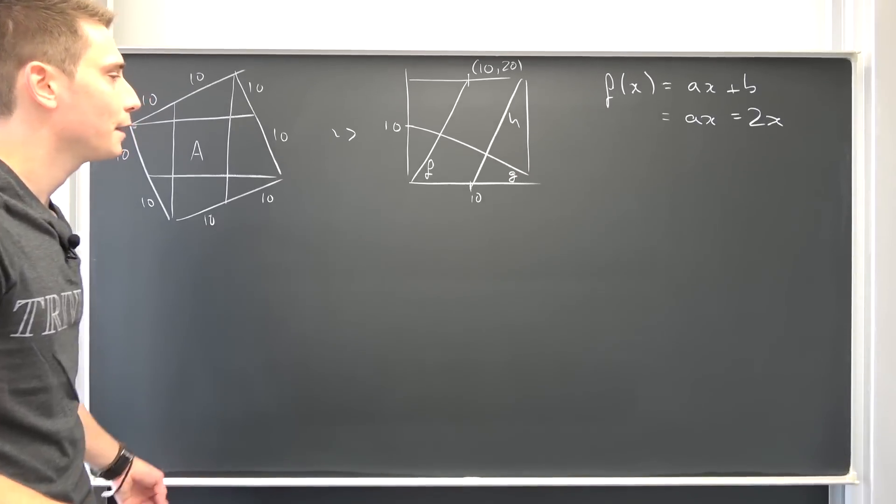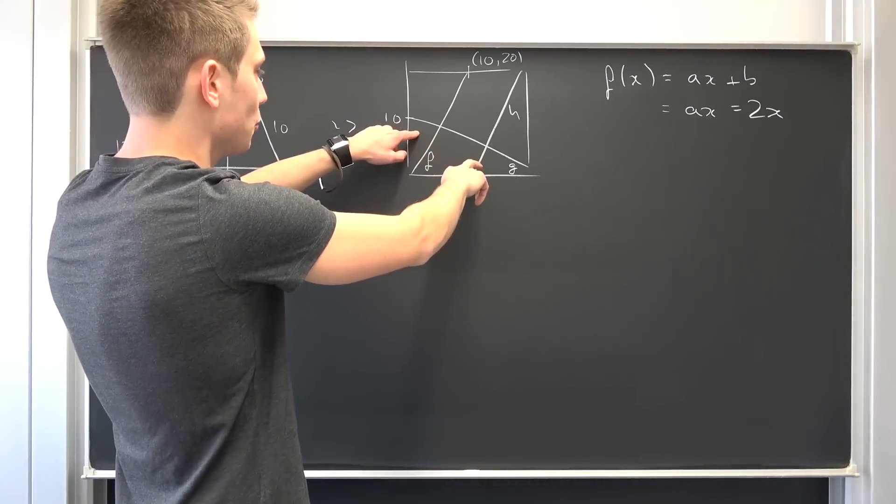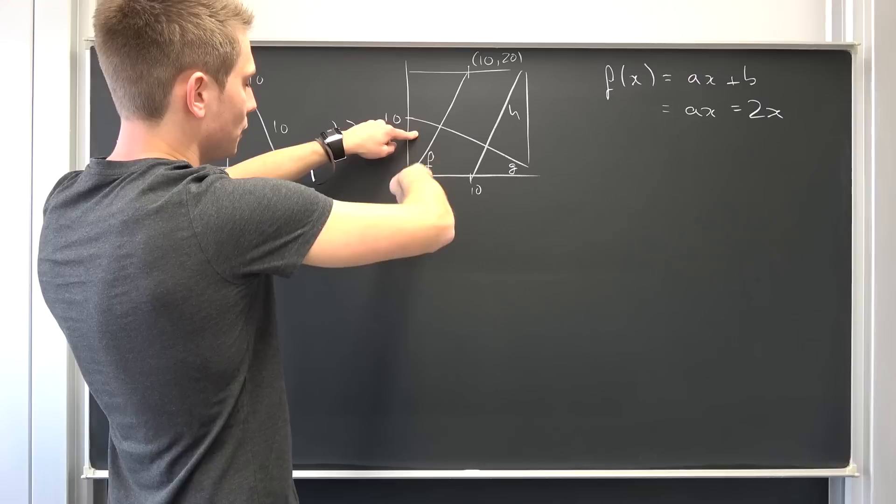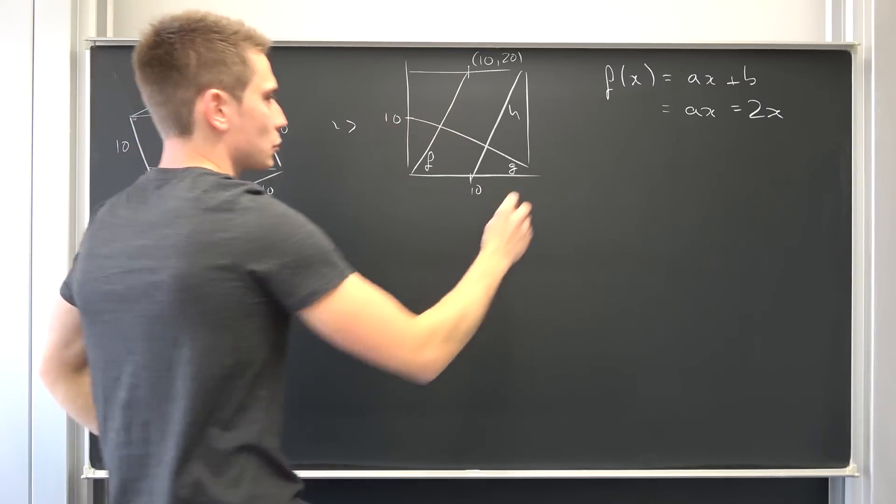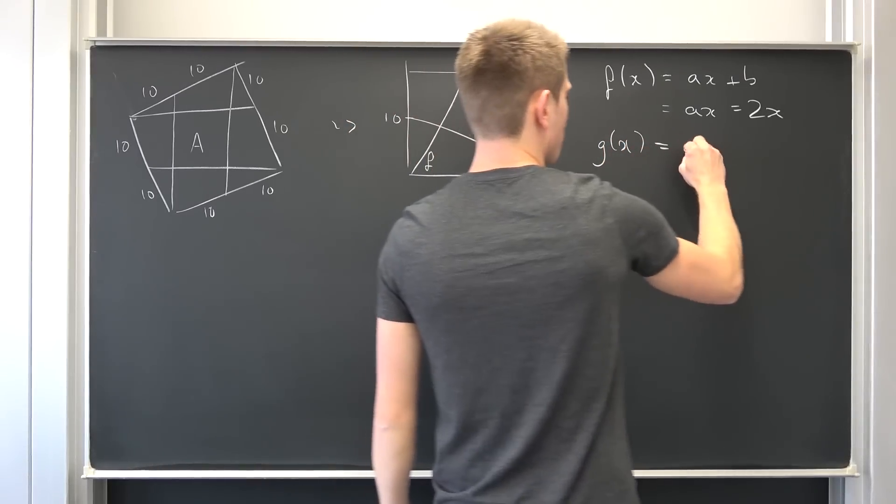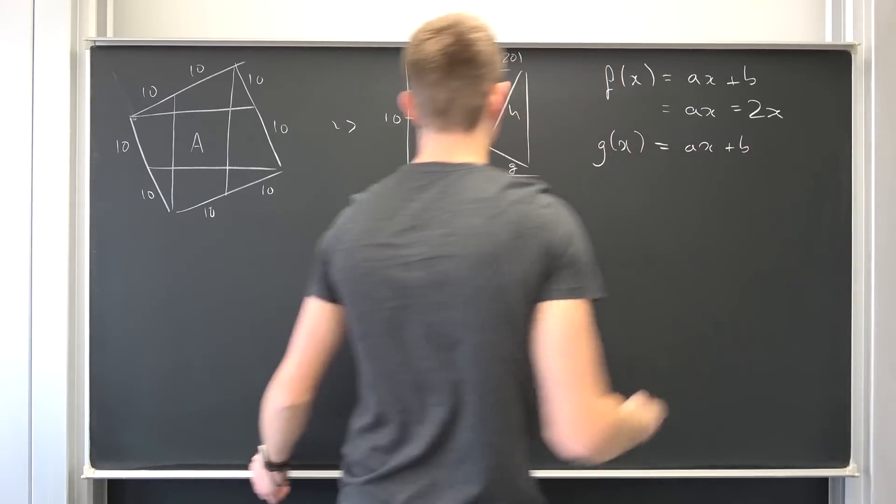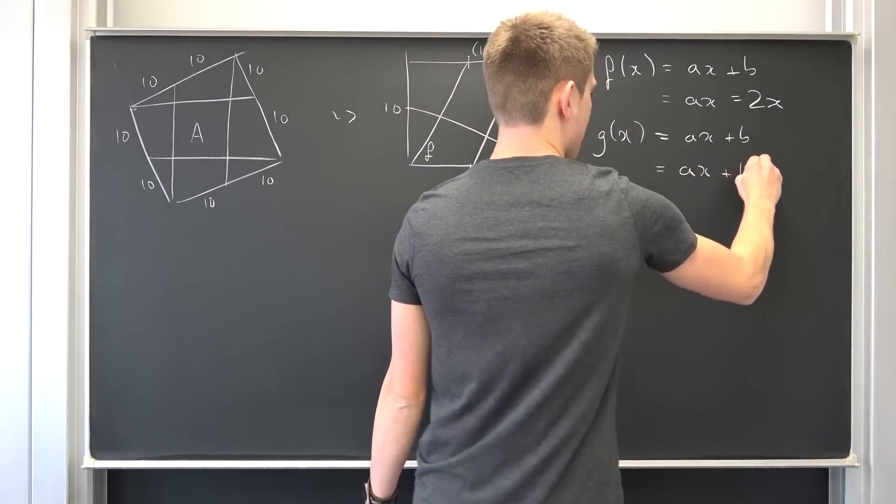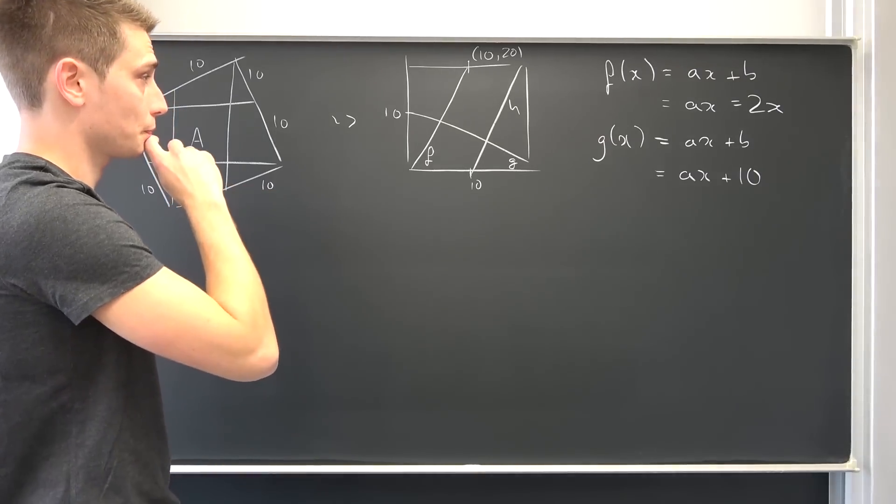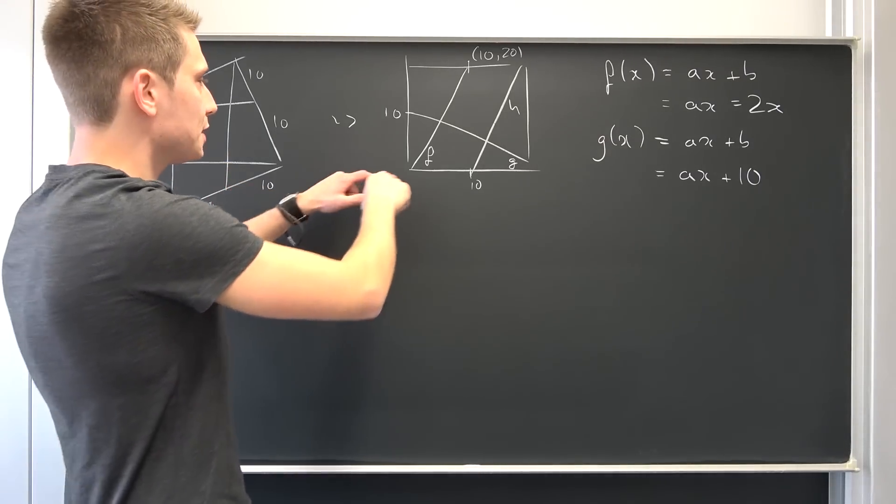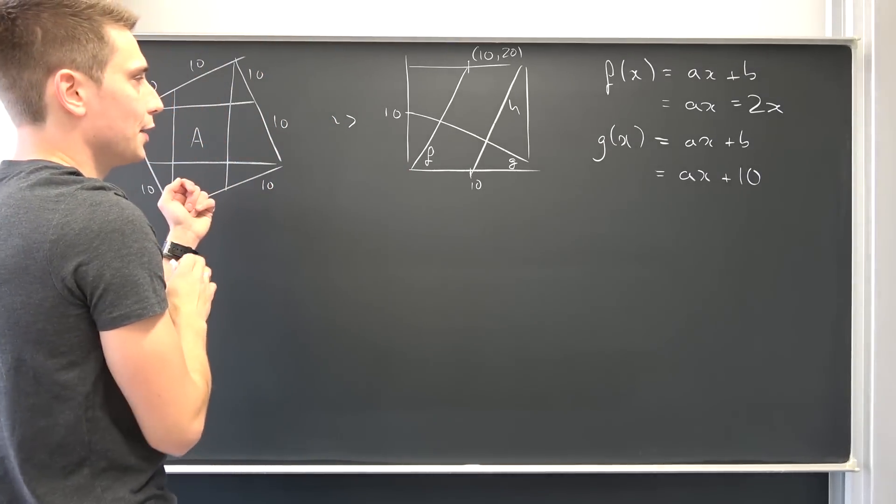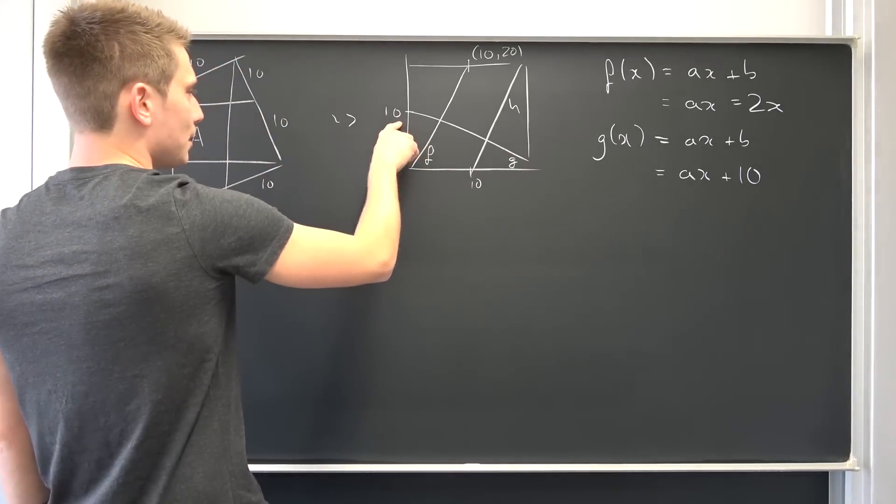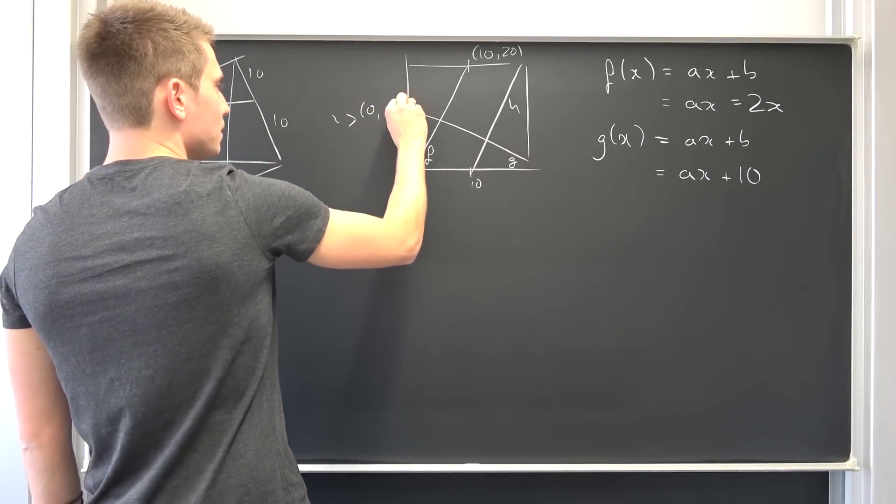Now what about our g of x? Our g of x is basically a normal to our f, but I'm going to construct it properly. So g of x is also of the form ax plus b. What is our y intercept? It's exactly at 10, meaning it's going to be ax plus 10. Now also from here on out, what is rise over run? We are going to have this point, this point up here is actually nothing other than 0, 10, and this point down here where it's also going to intersect is 20, 0.